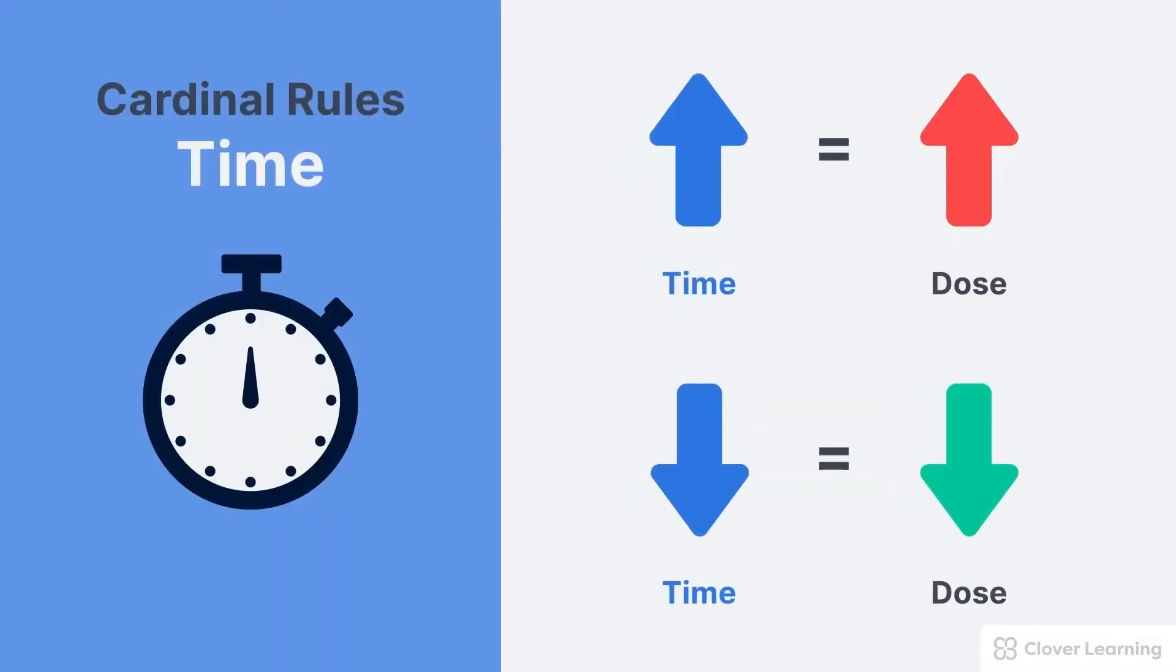We'll start with time. A person's time in a radiation field should be minimized because the relationship between exposure time and radiation dose is directly proportional. As time goes up, the radiation dose goes up by the same amount. As time goes down, the radiation dose goes down by the same amount.